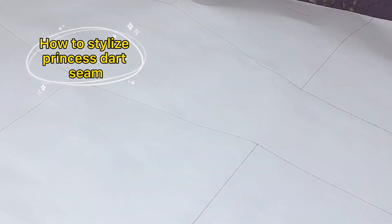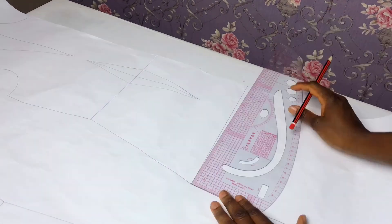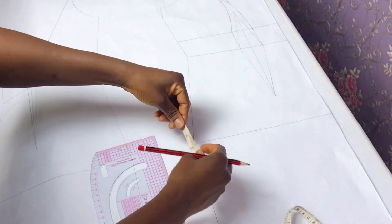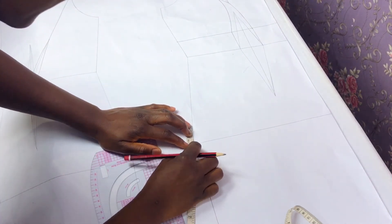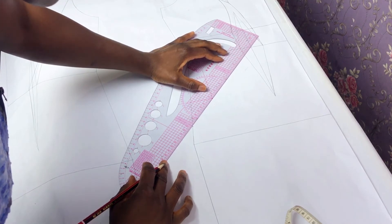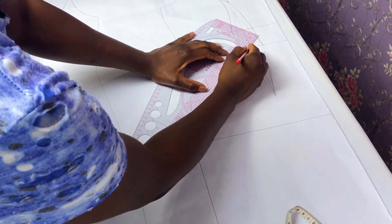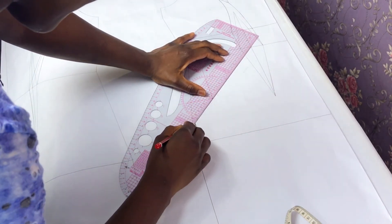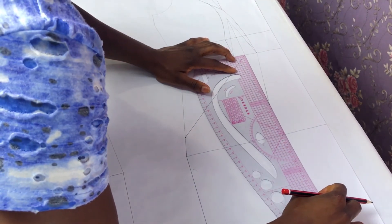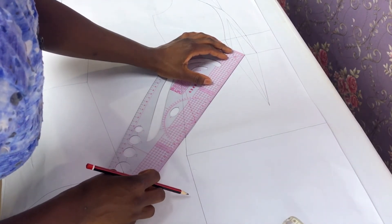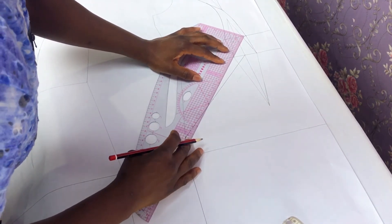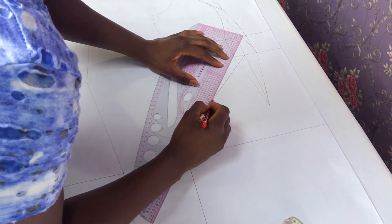Lastly, to stylize your princess dart seam, first you extend your bodice to the length of your dress or use your dress pattern upper bodice. Here I have done the armhole princess dart so I've done my tightening and all of that. For the lower part, that's the skirt part, I came up from the hip line by 1.5 inches and this is by no means a standard, you can do whatever looks good to you.